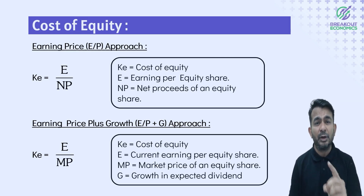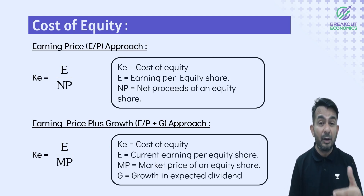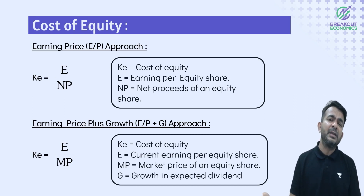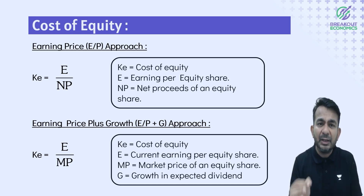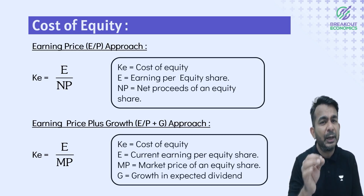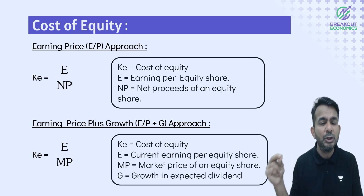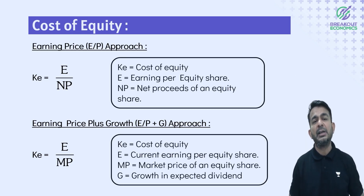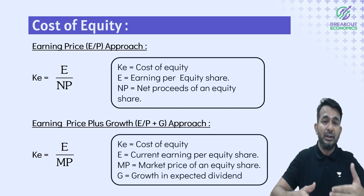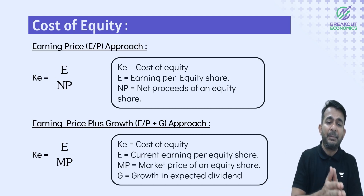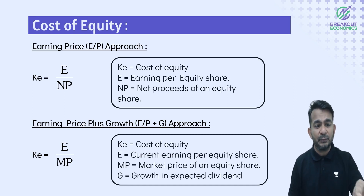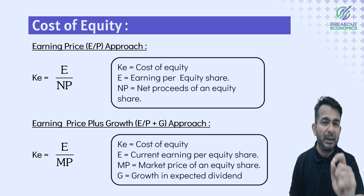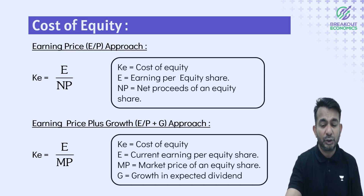For the earnings price approach, cost of equity depends on earnings, not dividends. So KE = E / NP. For the earnings plus growth approach: KE = E1 / NP + G, where E1 is next year's earnings.